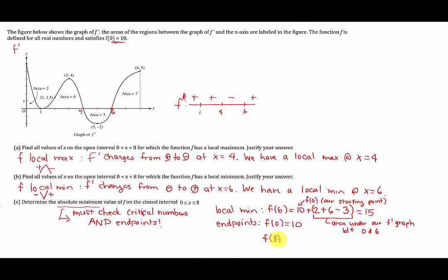Similarly, if I want to do f of 8, which is our other endpoint, we start at 10, we add 2 plus 6 minus 3 plus 7. In other words, we were at 15 right here at 15, and we just add 7 more, so we get 22. So how are we going to find the absolute minimum? The absolute minimum would just be the absolute smallest number that we just got from all this that we found. And so that's this number right here, 10, is smaller than 15 and 22. Therefore, our absolute minimum is f of 0 equals 10.